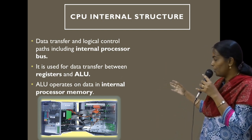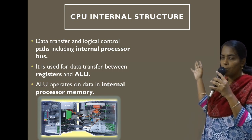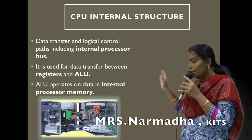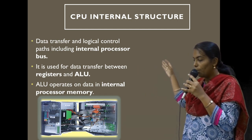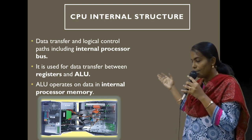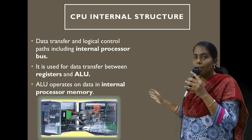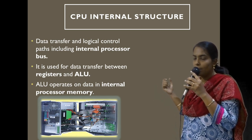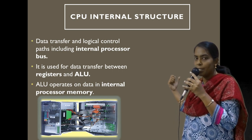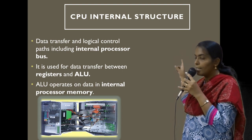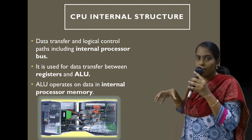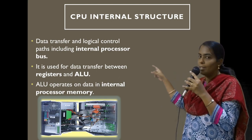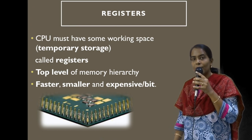Looking at the internal structure of the CPU, there is a collection of registers for temporary storage of data during computation. Inside the arithmetic logic unit we have a status register and the arithmetic and logic unit itself, which is the main component for arithmetic and logic operations. Importantly, there is an internal CPU bus — an ALU bus — which connects the control unit and registers with the ALU component.